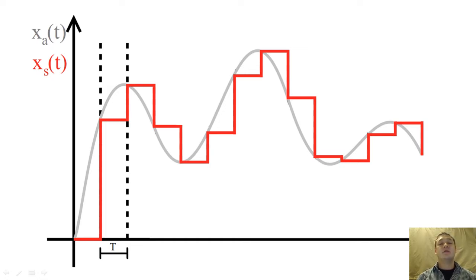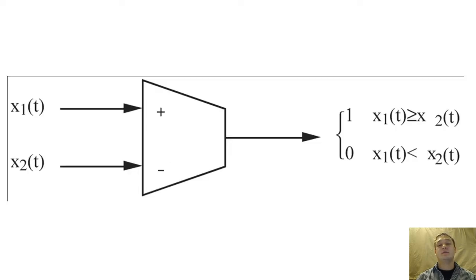Once we have x of s, we need to encode voltages into binary numbers. We accomplish this encoding by using comparator circuits. A comparator circuit outputs a 1 only when the input x sub 1's voltage is greater than or equal to a reference voltage x sub 2.